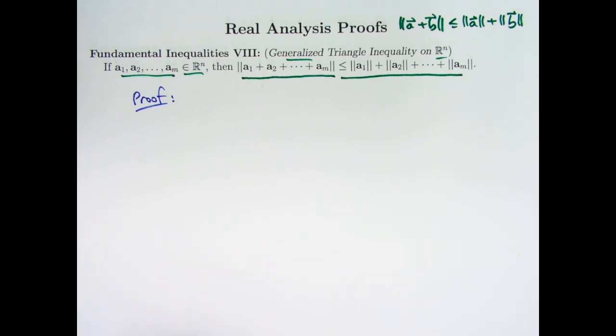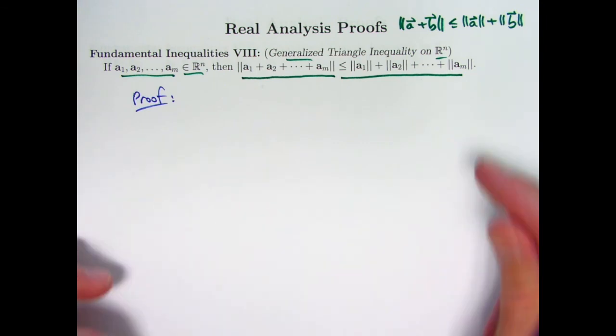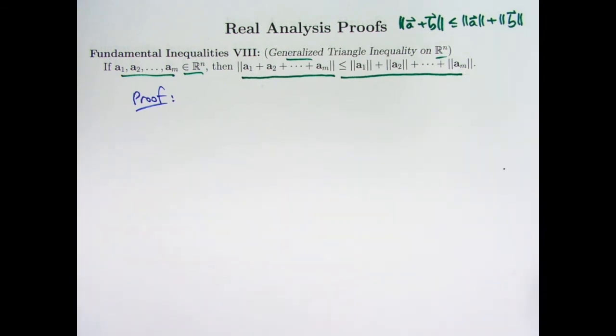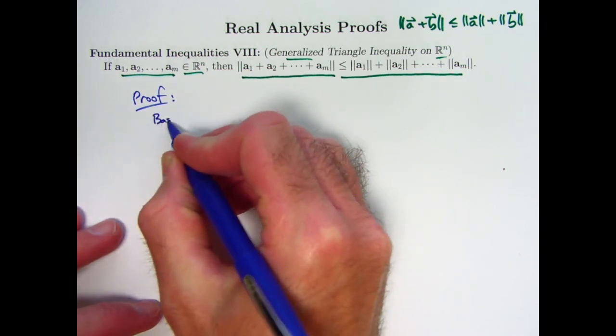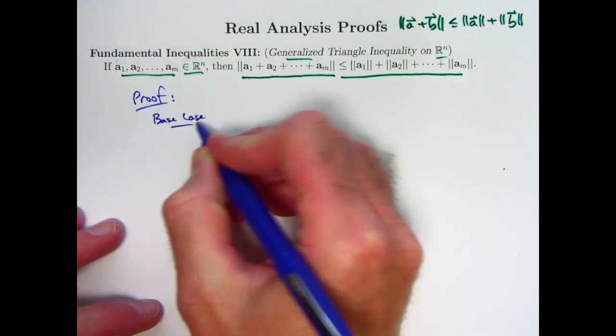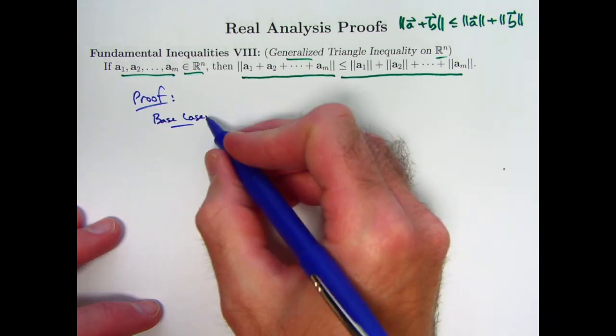All right, with induction, how do you do it? You've got a base case. You try to show what you want to show is true for that base case. Then you have what's called an inductive hypothesis, or an inductive step. You assume that this is true for some fixed positive integer m. And then, based on those things, you show that it's true for the next positive integer. So what is the base case here? The base case, as it often is, is the case where m equals 1.